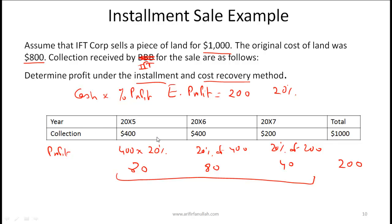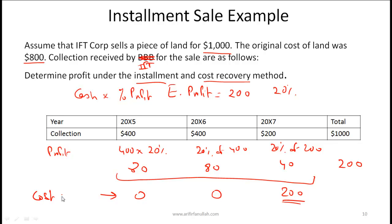Under the cost recovery method you record profits only after you have recovered all your costs. If your cost is 800, you collect 400 in year 1 — profit is 0. In year 2 you collect another 400, recovering the full 800 — profit is 0. Only in year 3 when you collect the remaining 200 can you recognize profit of 200. All profit is recognized in the final year under the cost recovery method.